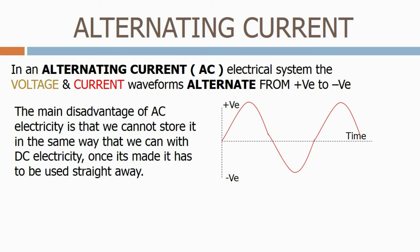The main disadvantage of AC electricity is that we cannot store it in the same way that we can with DC electricity. Once it is made, it has to be used straight away.